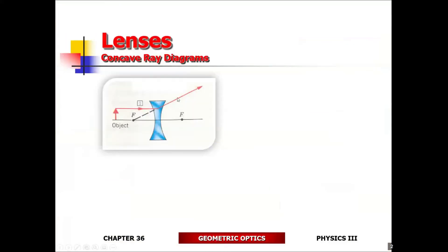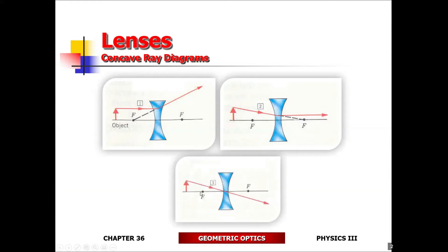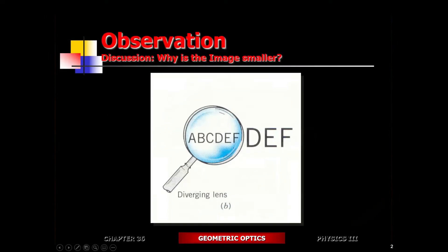The ray parallel to the axis, upon refraction, is going to move in such a direction that when you extend the refracted ray it's going to go right through the focal point. Rule two: the ray which is directed towards the focal point upon refraction is going to go parallel to the optical axis. Ray tracing rule three: the ray directed towards the center of the lens upon refraction will go right through.